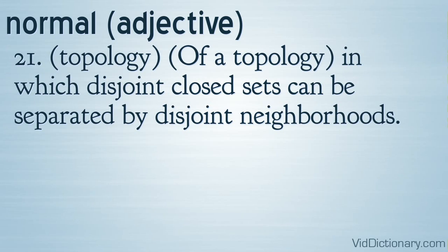Definition 21: Topology — of a topology, in which disjoint closed sets can be separated by disjoint neighborhoods.